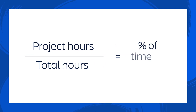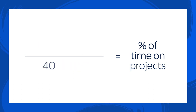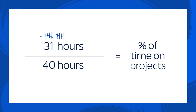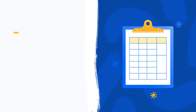The goal here is to see how much time your team spends on projects per week. For example, if a teammate has a 40-hour work week and 10 of those hours are spent on admin tasks, town halls, one-on-ones and coffee runs, that means 30 hours or 75% of their time is spent on projects.